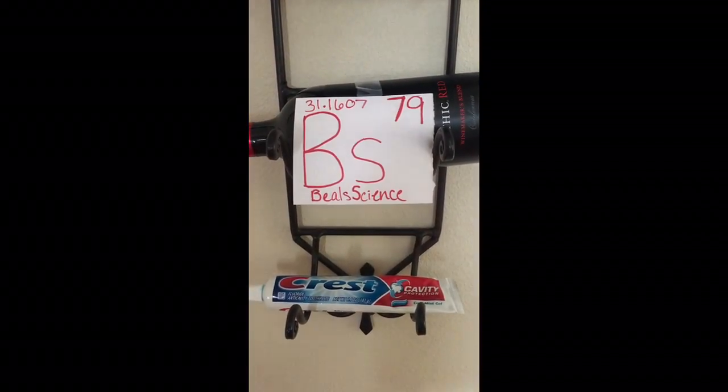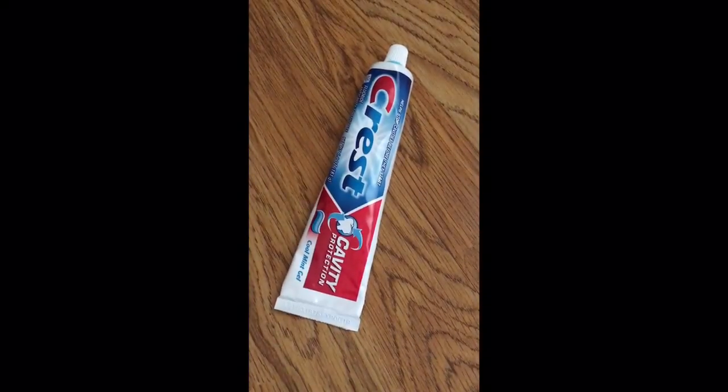The only two active ingredients in toothpaste are sodium fluoride NaF and triclosan C12H7Cl3O2. However, these two ingredients are found in very small amounts, each counting for only 0.2 to 0.3 percent of the toothpaste.